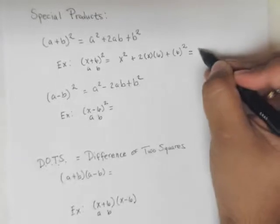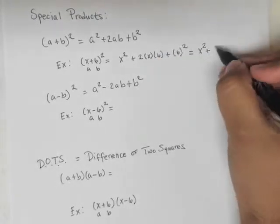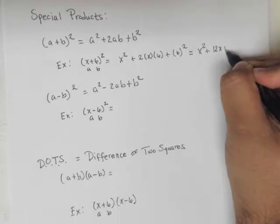Let's take a look at this. I have x², that fits my a² condition, plus 2 times x times 6, plus 6². Now simplifying that, I get x² plus 2 times x times 6 is 12x, plus 36.